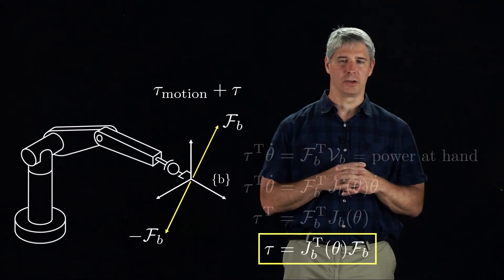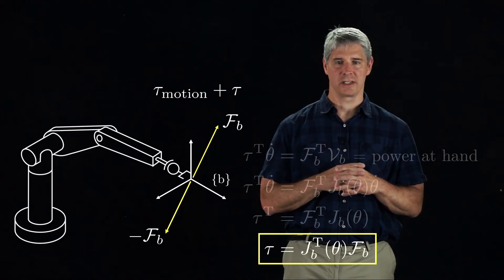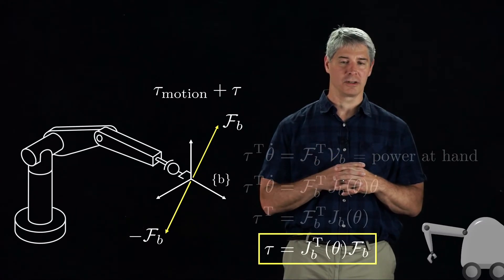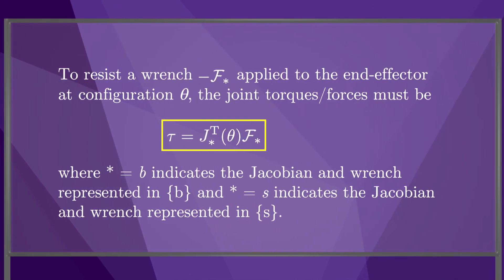The exact same derivation holds for wrenches and Jacobians expressed in the space frame S, so we can generalize to the following main result of this video. To resist a wrench minus F applied to the end effector at a configuration theta, the joint torques and forces tau must be J of theta transpose times F. This result holds no matter what frame Jacobian and wrench are expressed in.